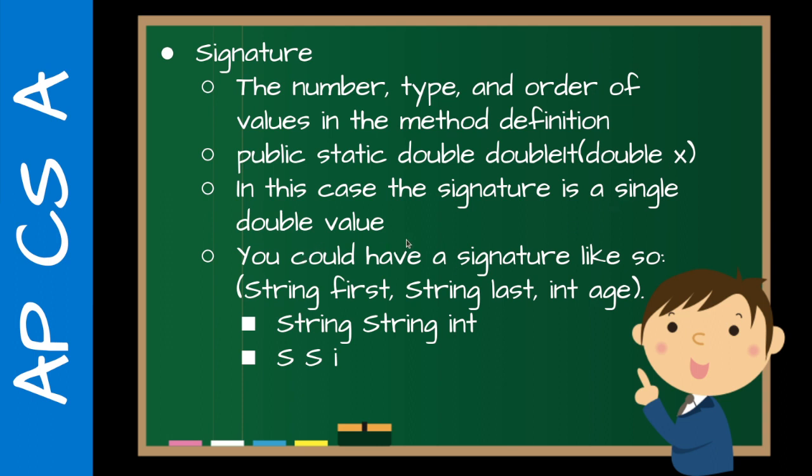But yeah, you could have a signature like first, last, first name, last name, age. So in this case, string, string, int. And what I tell my students to do when they're taking the test is just a little bit of a shortcut is to write the signature like this. So capital S, capital S, and I. So that'll kind of, usually, they're not going to have like some other object with the same capital letter, typically speaking. So I for integer, D for double, and B for boolean, capital S for string.